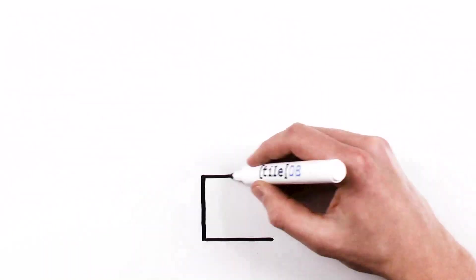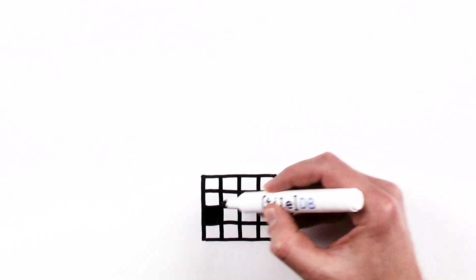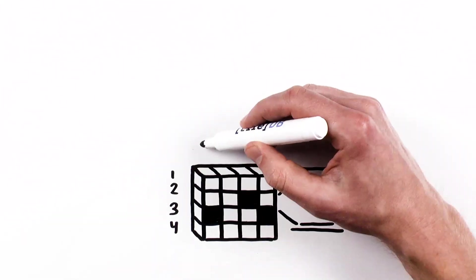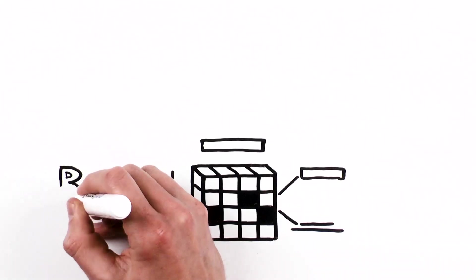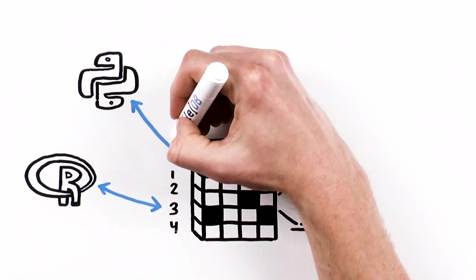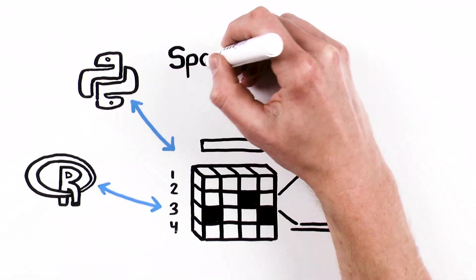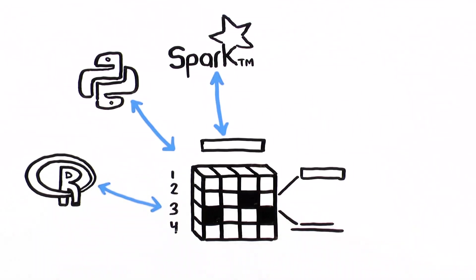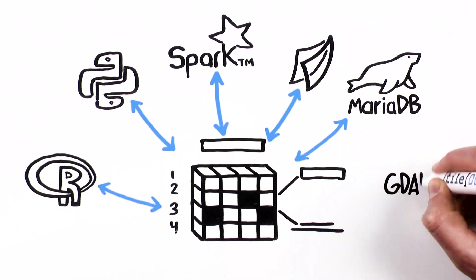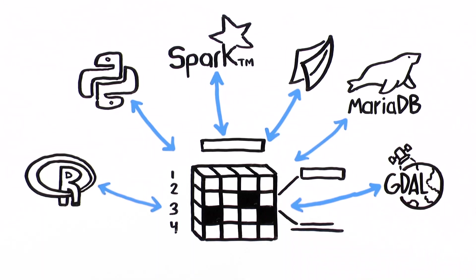Second, teams may access the same data via different tools, therefore interoperability matters. TileDB comes with many APIs and integrates with Spark, Dask, MariaDB, GDAL, and more.